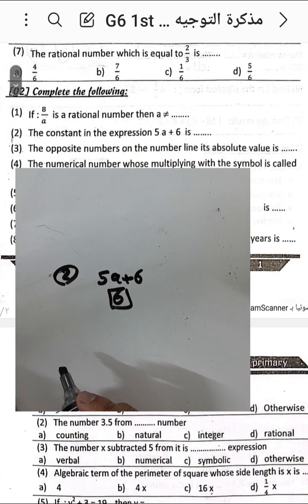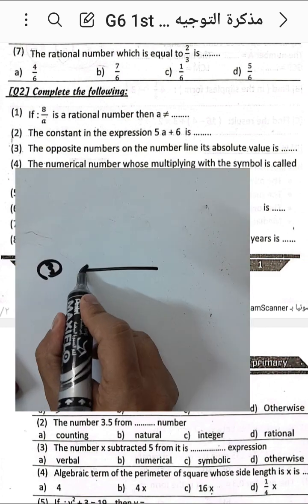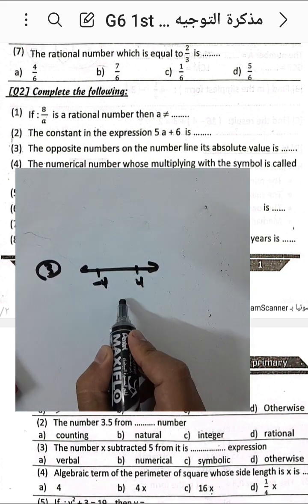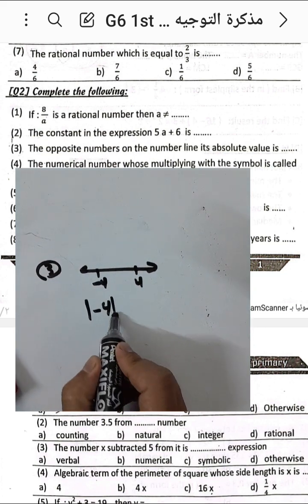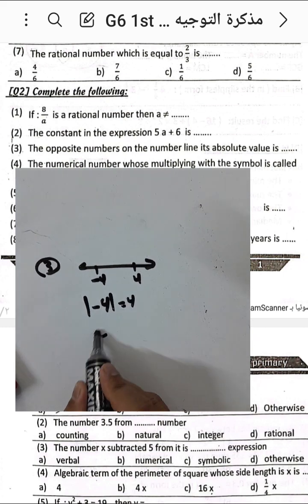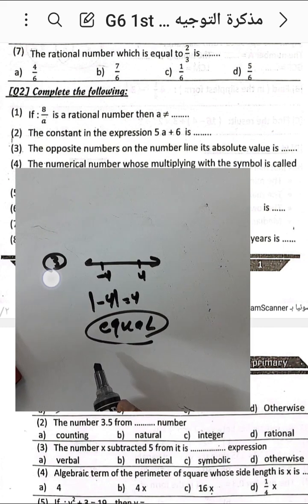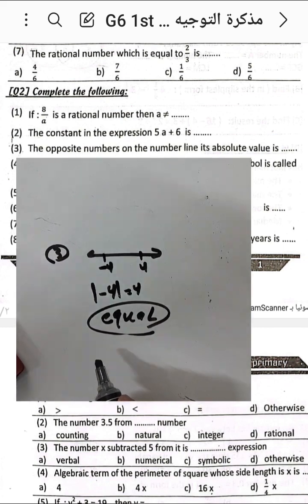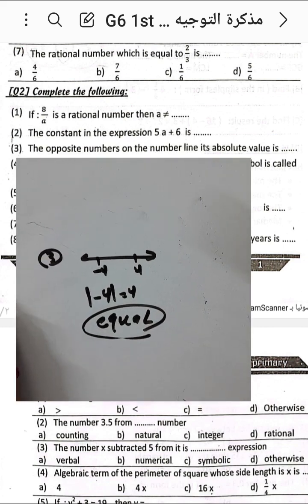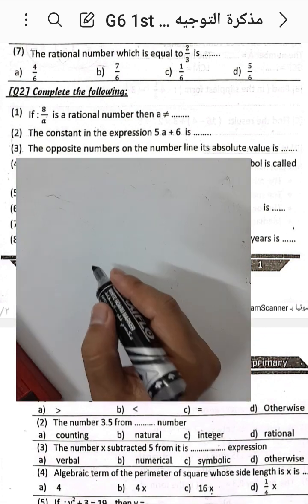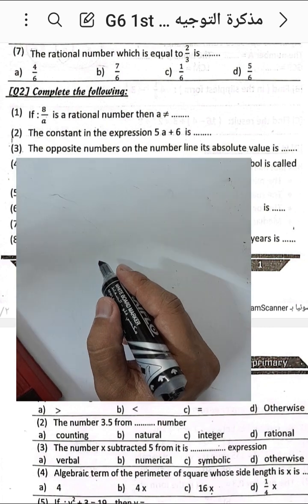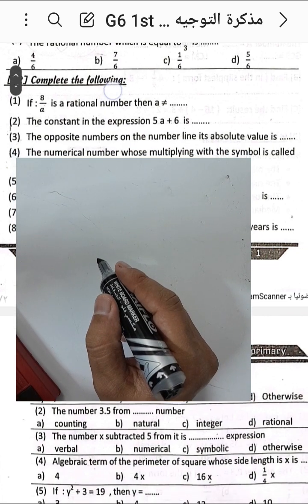Question number three: opposite numbers on the number line have equal absolute values. For example, negative four and four are opposites. The absolute value of negative four is four, so we write that their absolute values are equal.